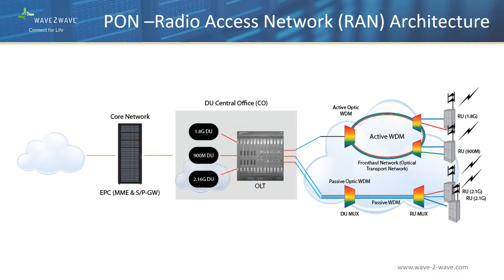PONs can be used to connect CO-based digital units to remote radio units, and this network is often referred to as front haul. As the number of streams on a single pair increases, it becomes more important to have geographical redundancy and protection in case of a fiber cut. A high number of RU streams can be transported into a reduced number of optical fibers using wavelengths and PONs instead of dedicated fiber links. Given the increase in traffic bandwidth, it is also important that PON standards and technologies support bandwidth evolution.